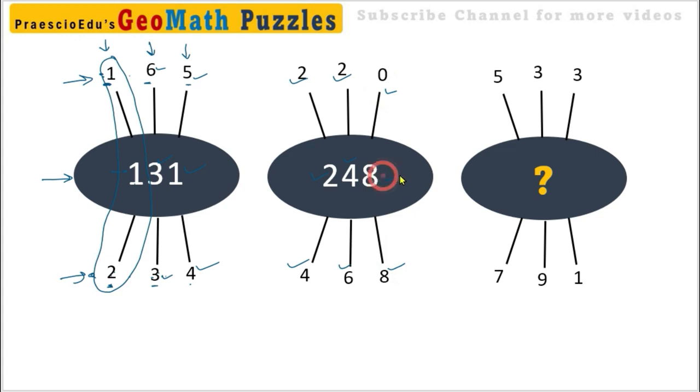Like this, five and seven, the difference comes to two. I'll note down here because of the color it cannot be recognized. Three and nine, difference is six. Three and one, difference is two.